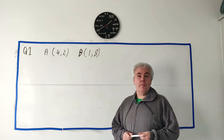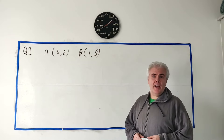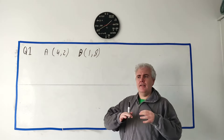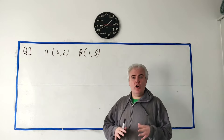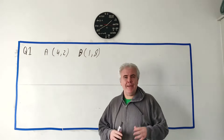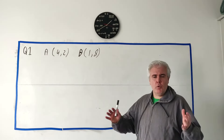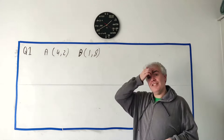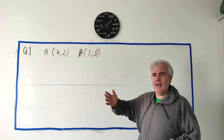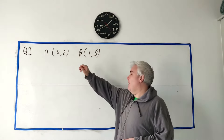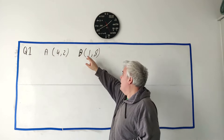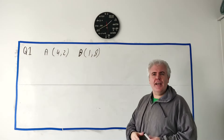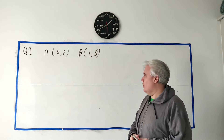This is question one from paper two and we're going to be looking at points and coordinate geometry — all about a line, midpoints, equations of a line, distance, things like that. In part A, it tells us we have two points F(4,2) and B(1,8) and they ask us to work out the slope.